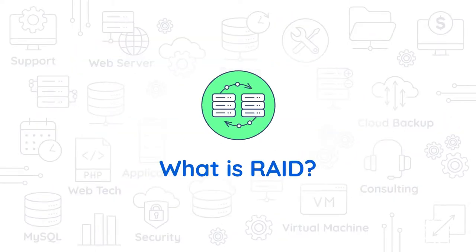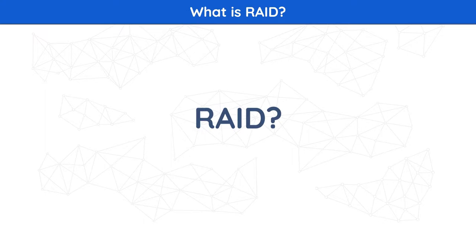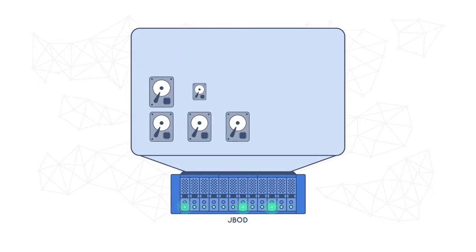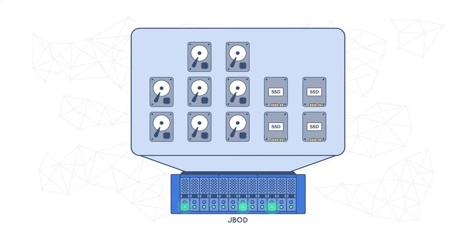What is RAID? RAID technology is used to increase the performance and reliability of data storage. The abbreviation stands for either Redundant Array of Independent Drives or Redundant Array of Inexpensive Discs, which is older and less common. A RAID system consists of two or more drives working in parallel. These can be hard disks, but there's a growing trend to also use SSD technology.